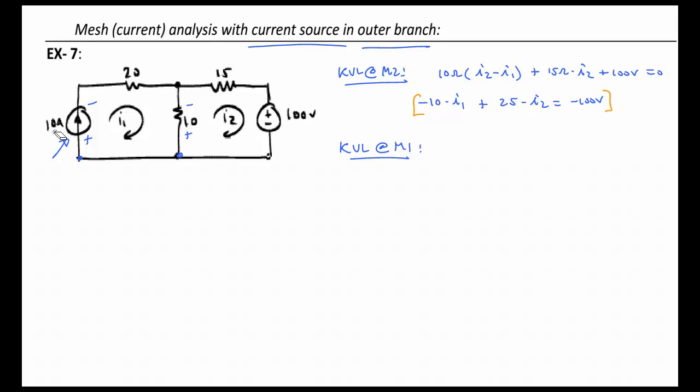So here we have the same thing, and likewise we have a trivial situation. We don't need to solve for I1 because I1 is constrained already to be 10 amps.